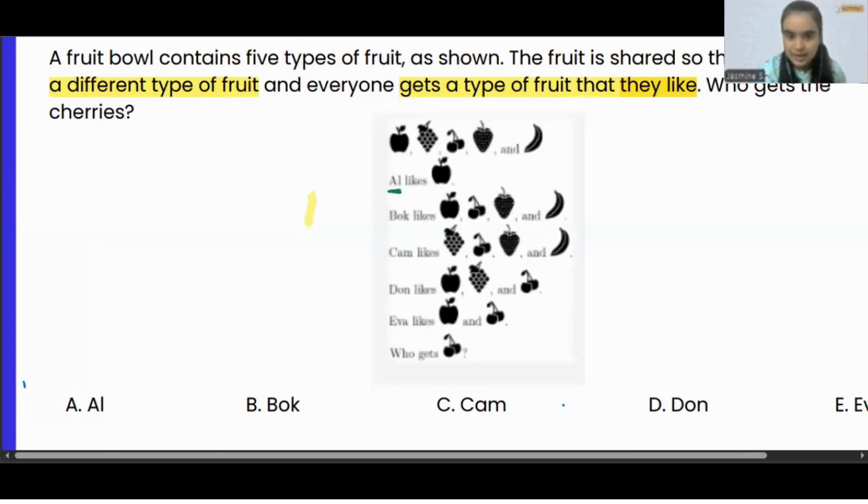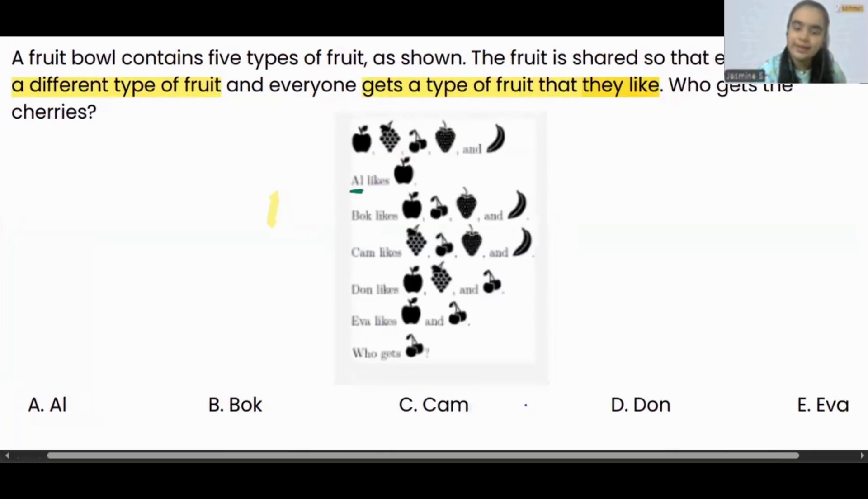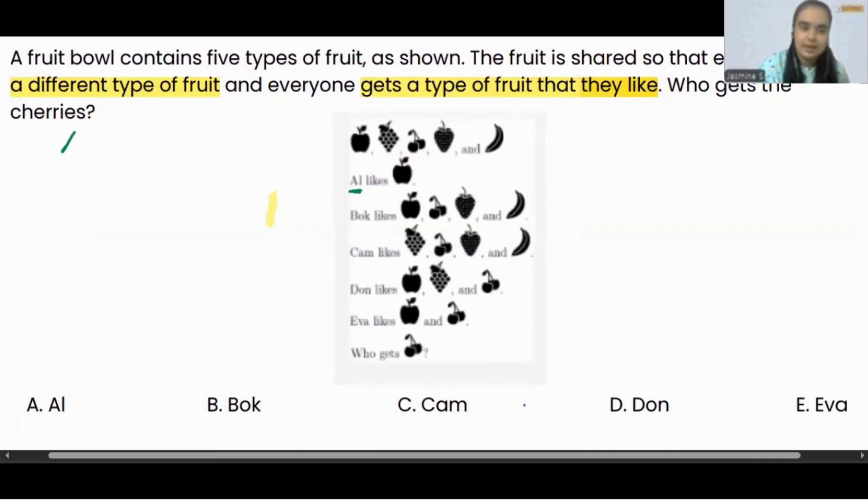From here I am able to see Al is having apple only, right? Al only likes apples. So that means Al is going to get apples, correct? Because no other fruit he likes. He only likes apples and each one will get the type of fruit they like. So if Al is getting apples, we can remove apple from all the other people, correct?